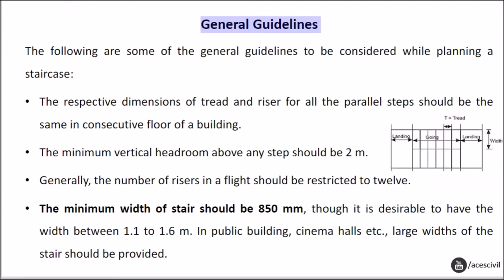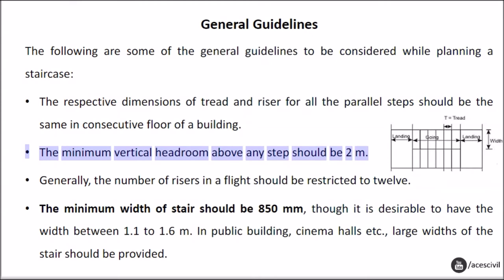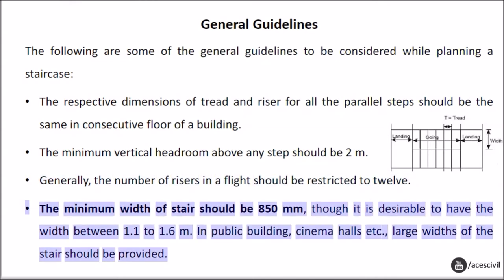General Guidelines: the following are some general guidelines to be considered while planning a staircase. The respective dimensions of tread and riser for all parallel steps should be the same in consecutive floors of a building. The minimum vertical headroom above any step should be 2 m. Generally, the number of risers in a flight should be restricted to 12. The minimum width of stairs should be 850 mm, though it is desirable to have the width between 1.1 to 1.6 m. In public buildings, cinema halls, etc., large widths of stairs should be provided.